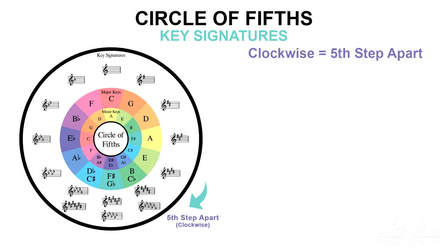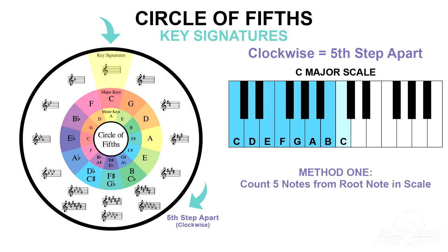The reason why it's called the circle of fifths is that when you move clockwise around the circle, each key is a fifth step up from the last. For example, the C major scale is C, D, E, F, G, A, B — so you start at C and count five notes up to G. C, D, E, F, G. That means G is a fifth step up from C.